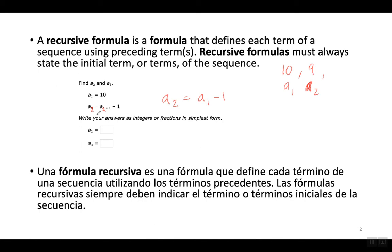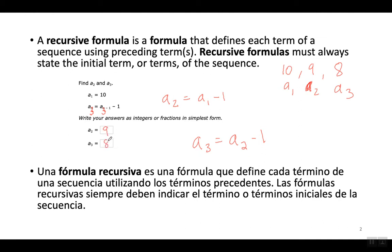Para encontrar el tercer término voy a poner un 3 donde está la n — 3 aquí y 3 aquí. Cuando simplifico esto, 3 menos 1 me da 2. Así que para encontrar el tercer término tengo que hacer el segundo término menos 1. El segundo término era 9. 9 menos 1 es 8. El segundo término en la secuencia es 9, y el tercer término es 8.